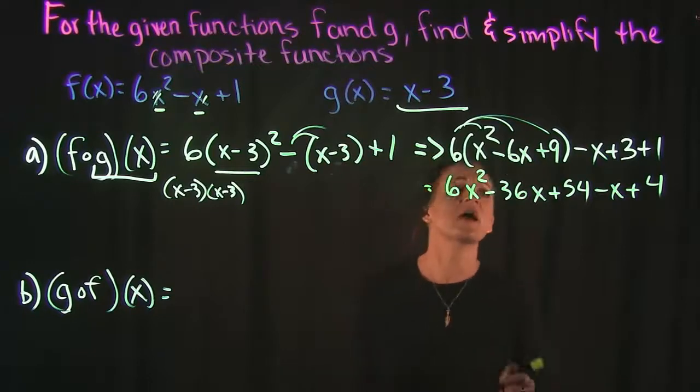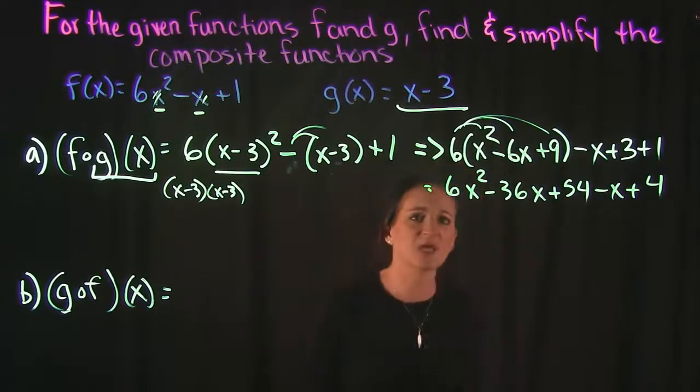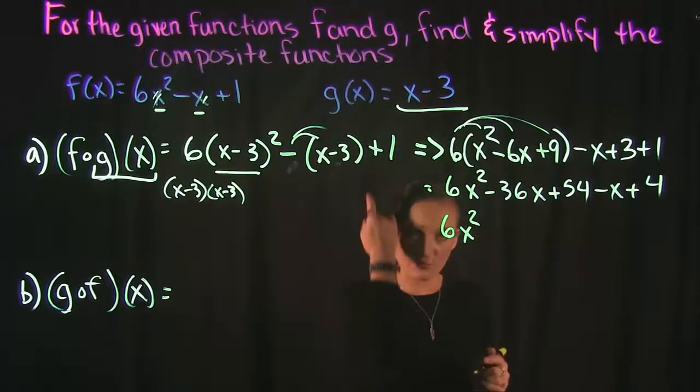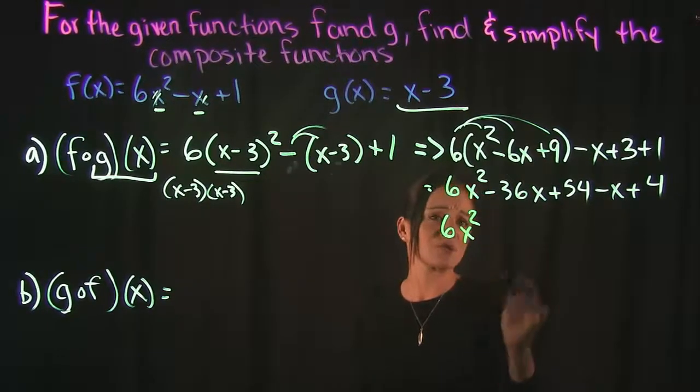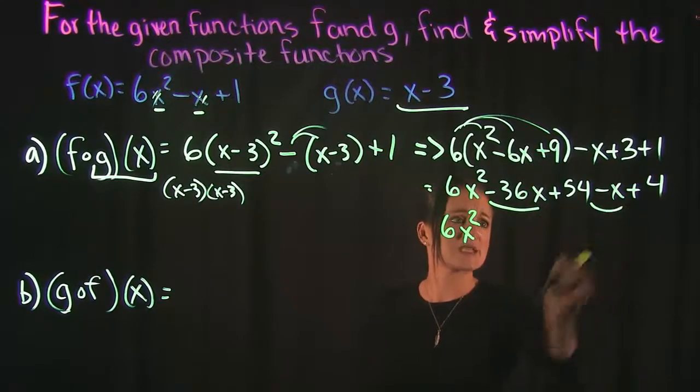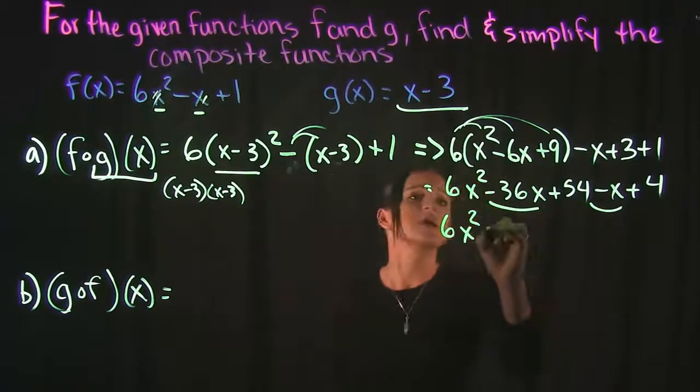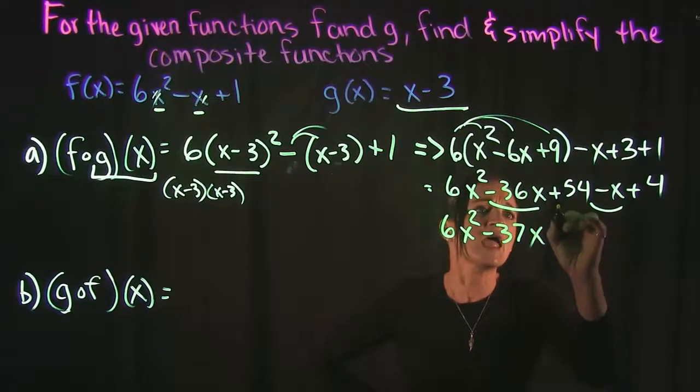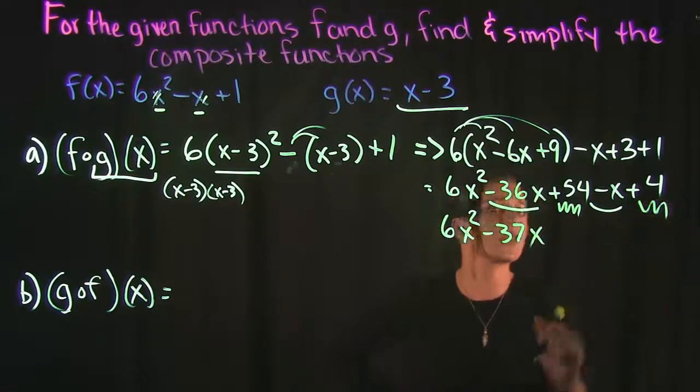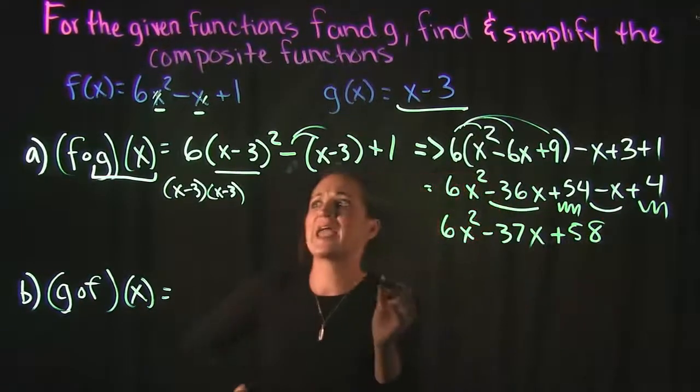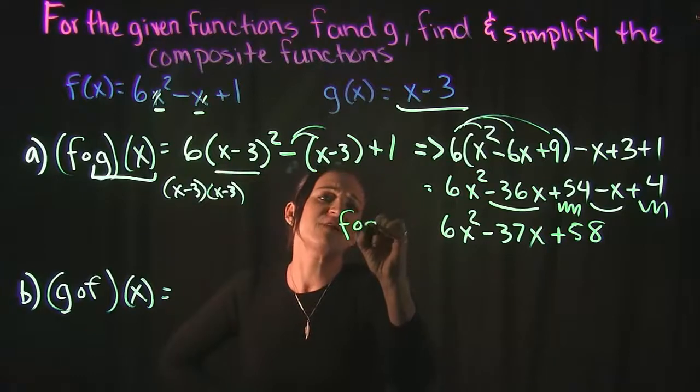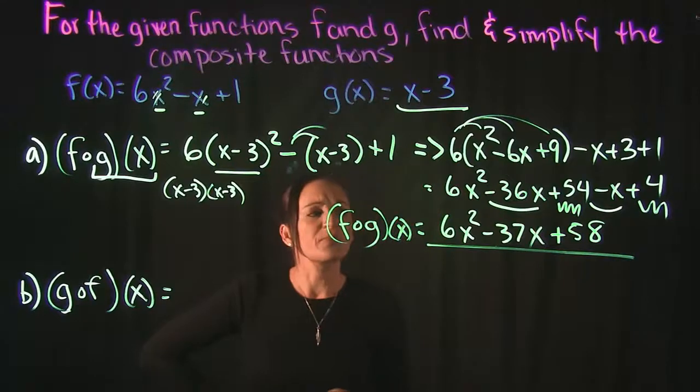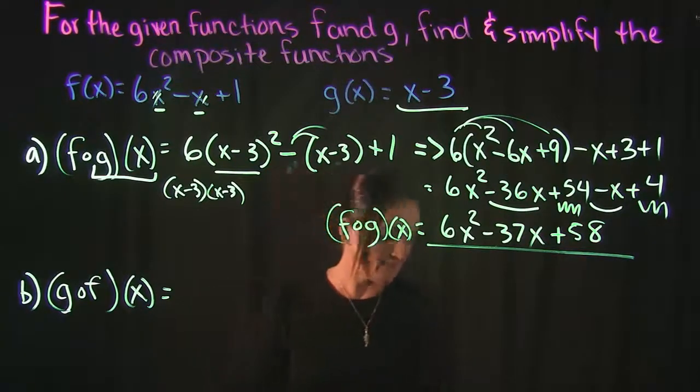Continuing on with our simplifying let's see if there's any like terms that we can combine. There's no other x squareds so that 6x squared is just going to drop down. I have 2x to the first power terms. I have negative 36x and a negative 1x giving us a minus 37x when we combine those together. And then I have a 54 plus a 4 which gives us 58. So that means f of g of x is equal to 6x squared minus 37x plus 58.